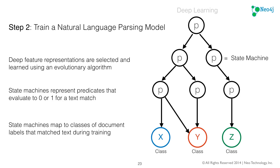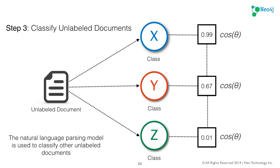State machines map to classes of document whose labels matched during the training phase. At the bottom we have three classes: X, Y, and Z. These predicates are attached to them because they were extracted from training data for those classes. Step three is to classify unlabeled documents. Now that you have your natural language parsing model, you classify based on the distribution of labels attached to documents in the training data. Here we have an unlabeled document connected to X, Y, Z, and there's a cosine similarity measure that ranks which of these classes was most relevant to the unlabeled text.